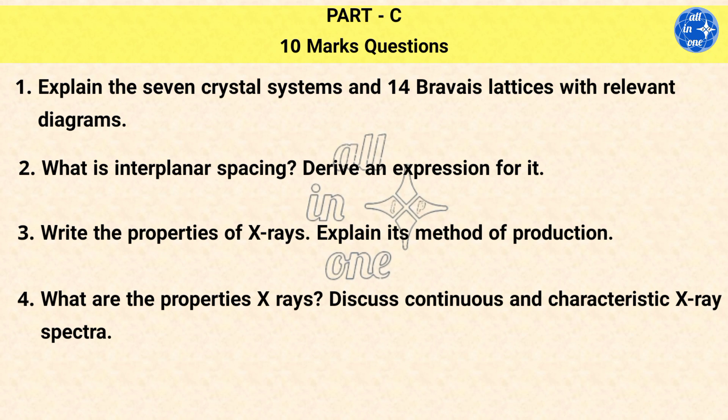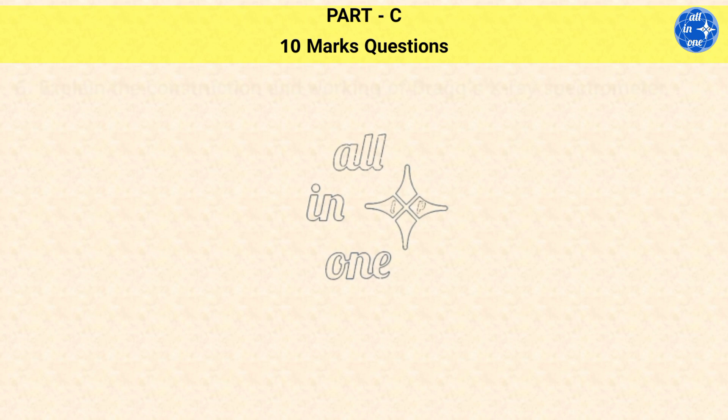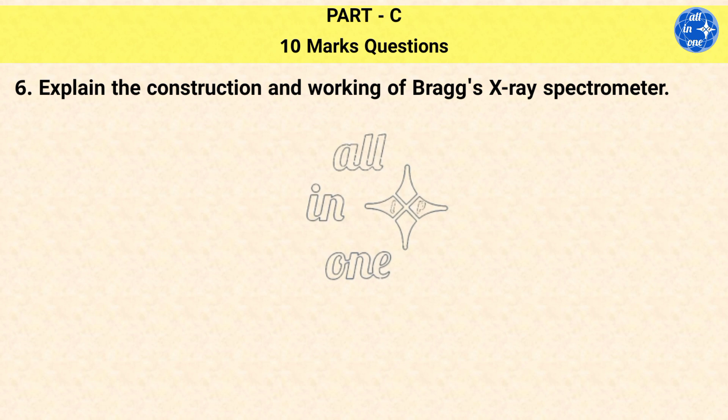Question 1: Explain the 7 crystal systems and 14 Bravais lattices with relevant diagrams. Question 2: What is interplanar spacing? Derive an expression for it. Question 3: Write the properties of X-rays. Explain its method of production. Question 4: What are the properties of X-rays? Discuss continuous and characteristic X-ray spectra. Question 5: What is X-ray diffraction? Explain the theory of Bragg's law. Question 6: Explain the construction and working of Bragg's X-ray spectrometer.